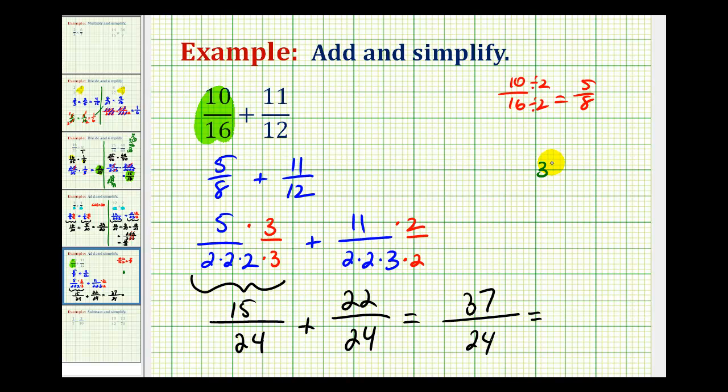So we'll take 37 and divide by 24. There's one 24 in 37, have a remainder of 13, which tells us that 37 twenty-fourths is equal to one whole and 13 twenty-fourths. The fraction here is the remainder over the divisor.